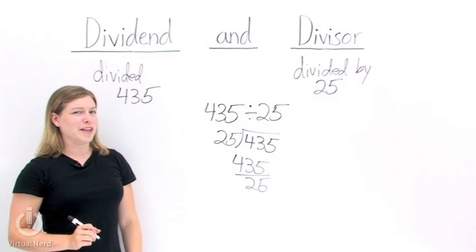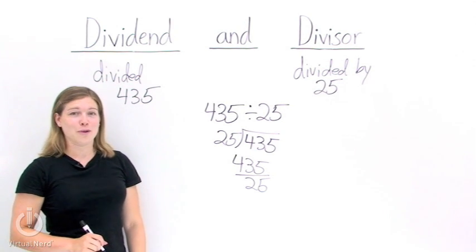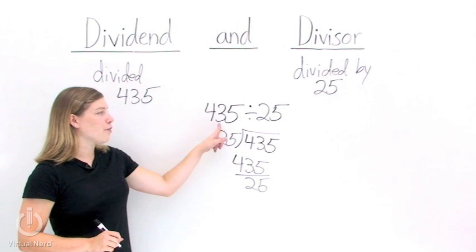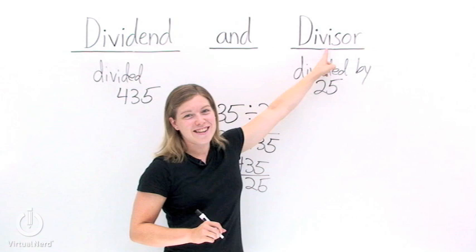Now since these words are really close together, here's a quick trick to help you remember them. They're divided in alphabetical order. So 435 divided by 25 or dividend divided by divisor.